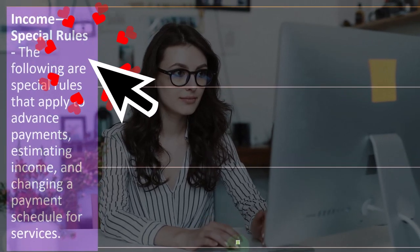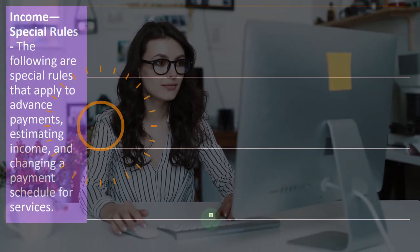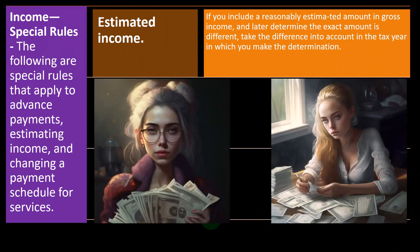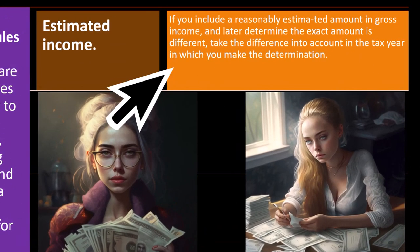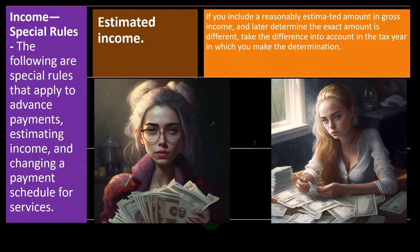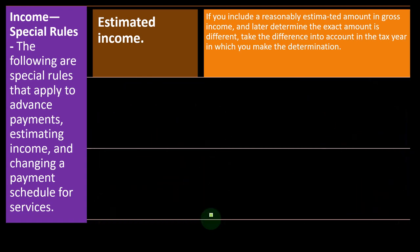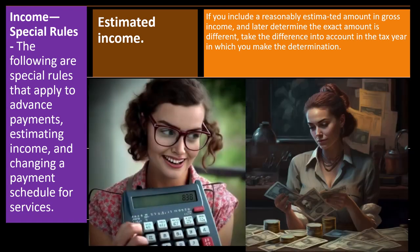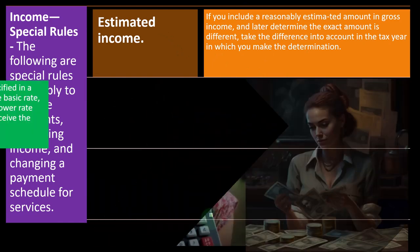Special rules apply to advanced payments, estimating income, and changing a payment schedule for services. For estimated income: if you include a reasonable estimated amount in gross income and later determine the exact amount is different, take the difference into account in the tax year in which you make the determination. You recorded the income when you earned it based on the estimate, but if the actual amount differs, you generally make the adjustment in the current year going forward rather than filing an amended return.